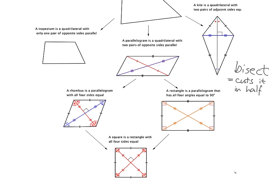This diagonal also bisects the angles — this angle and this angle. In other words, this little red bit and this little blue angle are equal. So this diagonal that comes all the way down the middle of the kite bisects the other diagonal and bisects the angles. Okay, that's the kite. Trapezium, as I said, nothing interesting.